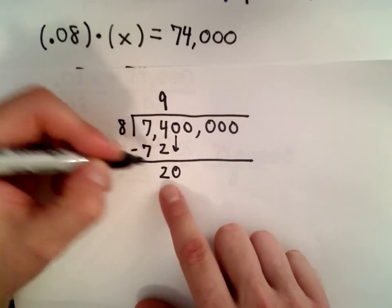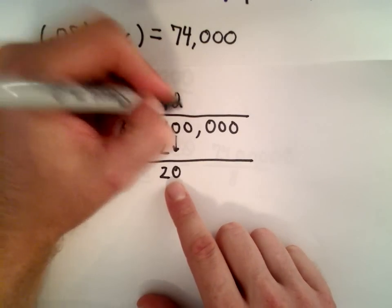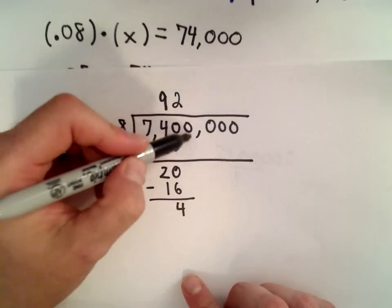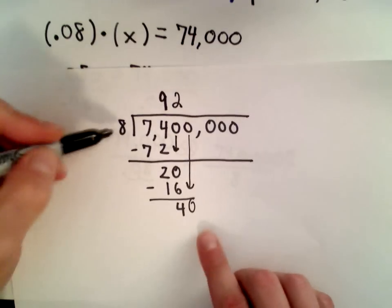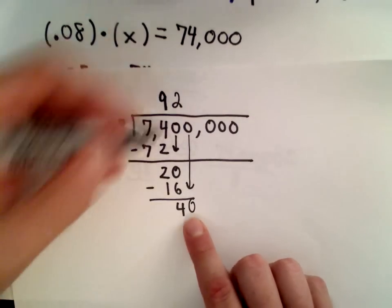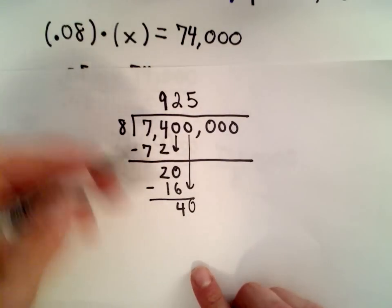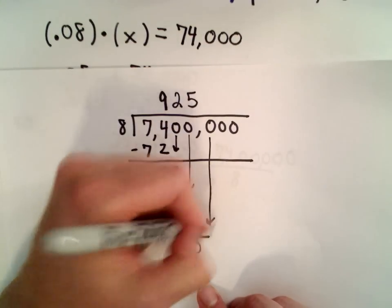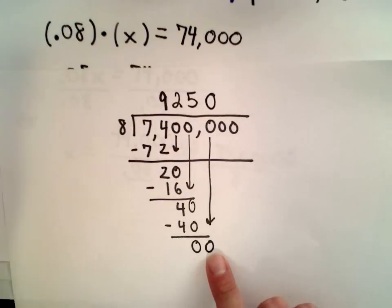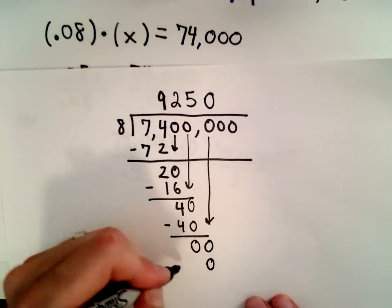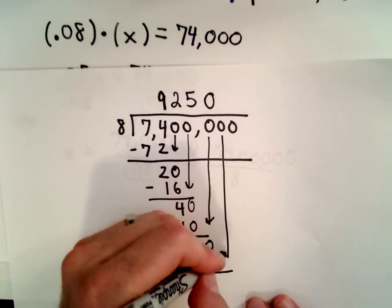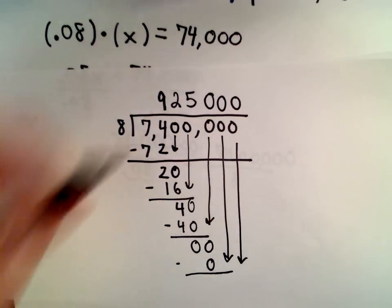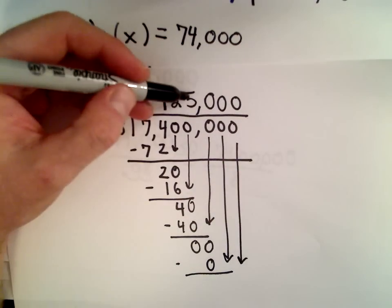So let's see, eight will go into 20, I guess two times. Two times eight is 16. 20 minus 16 is 4. Again, we'll drop down to zero. Eight will go into 40 five times. Five times eight is 40. And notice now, eight will go into zero, zero times. Zero times eight is zero. We're just going to keep dropping down zeros. So our answer in this case is going to be $925,000.